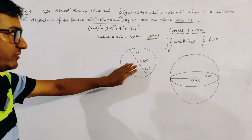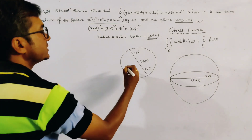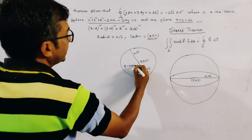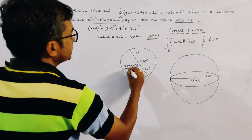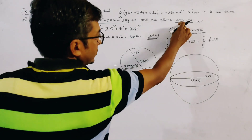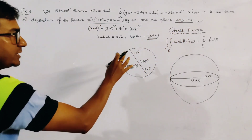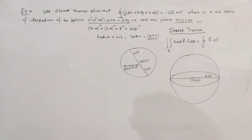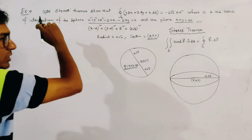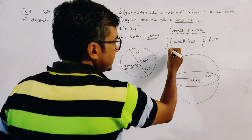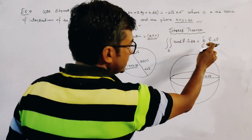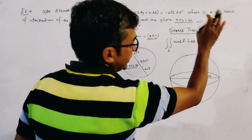This is the surface, given by phi equals x plus y minus 2a, and this is the plane of intersection with the sphere. Now, Stokes theorem states that the double integration over S of curl F dot n dS is equal to the circulation over C of F dot dr.